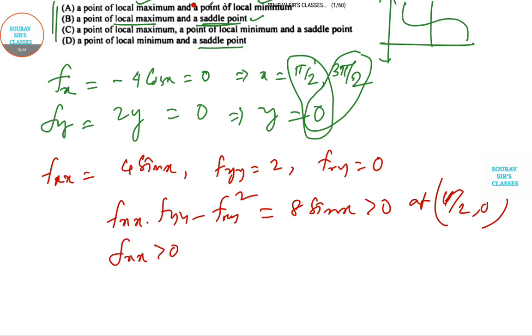Now if we evaluate at (3π/2, 0), sin(3π/2) is negative.